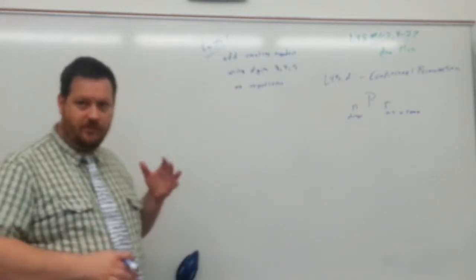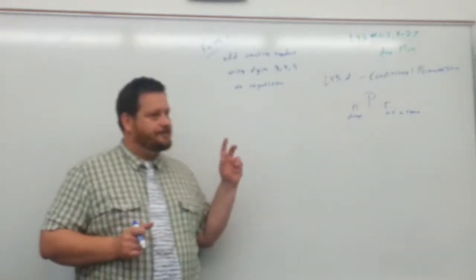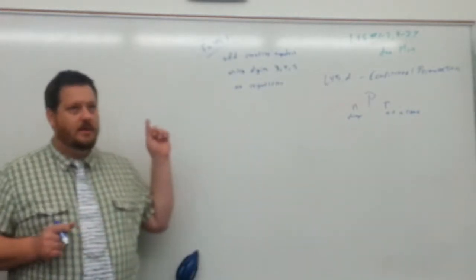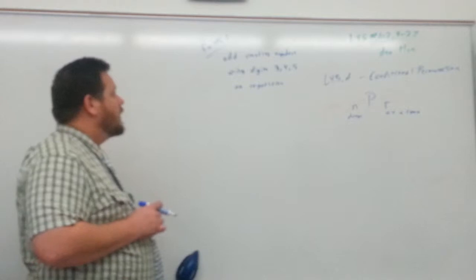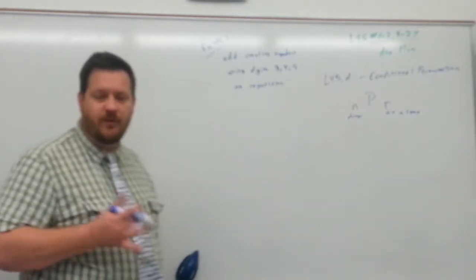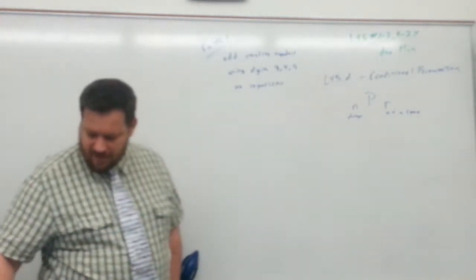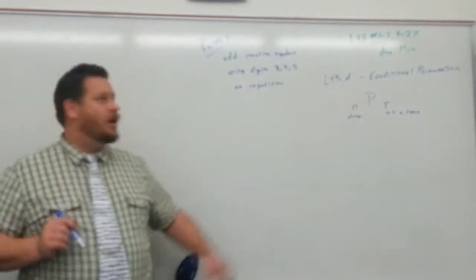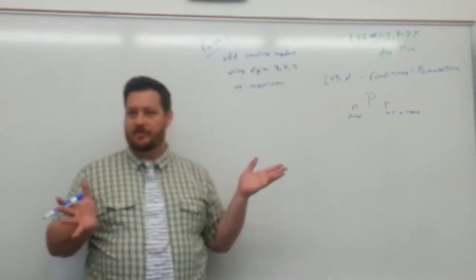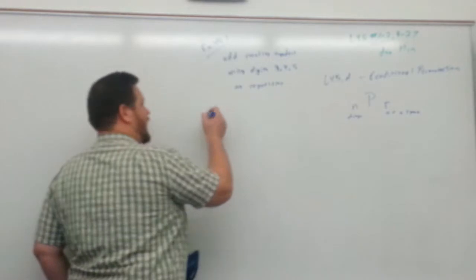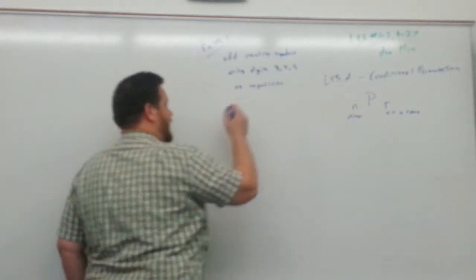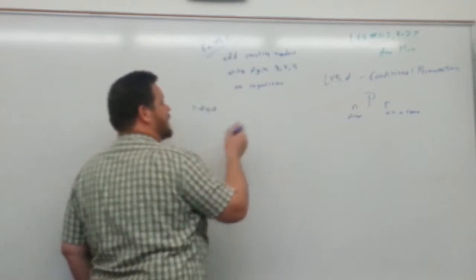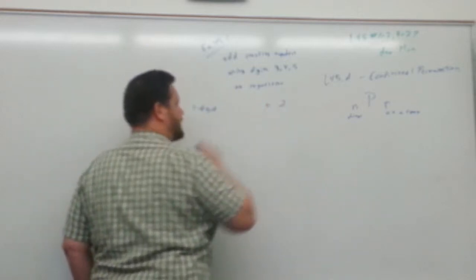We're talking about odd counting numbers with three digits to work with and no repetition. If we have a one-digit number, how many possibilities do we have? We can only use 3, 4, or 5, and it has to be odd. So we could have a 3 or a 5 — that gives us two possibilities for one-digit odd numbers.